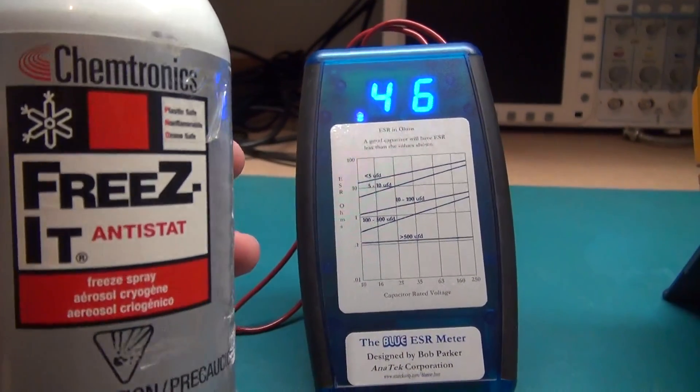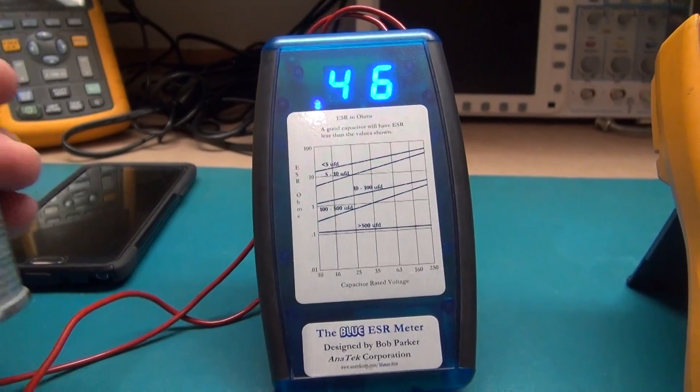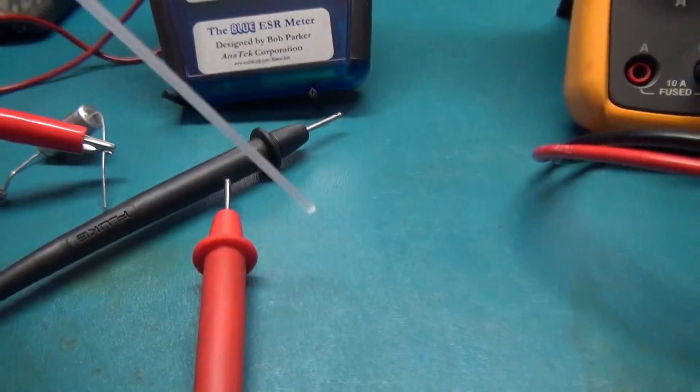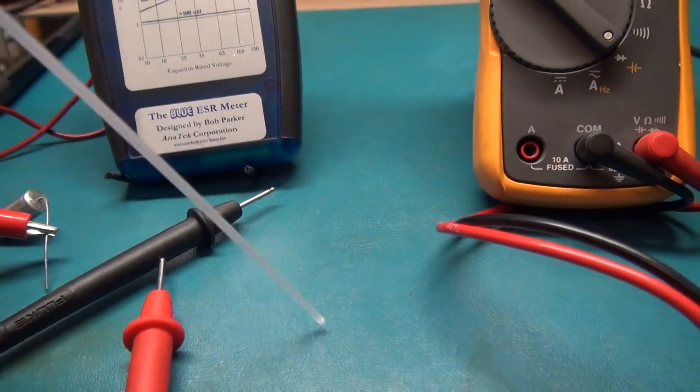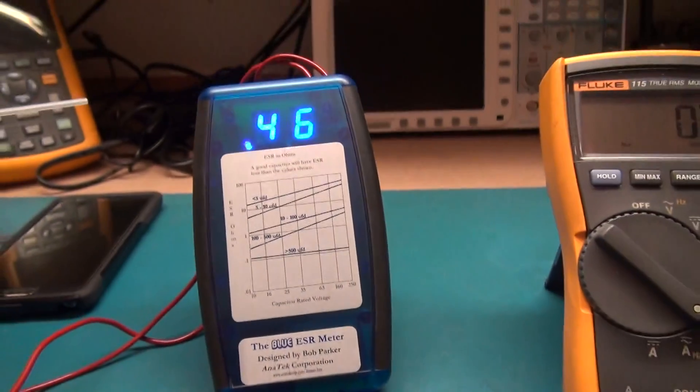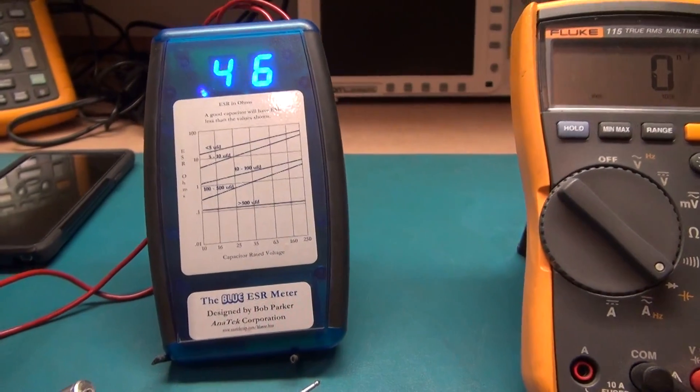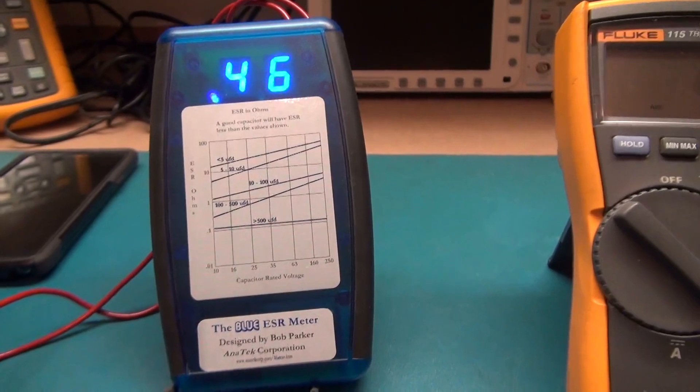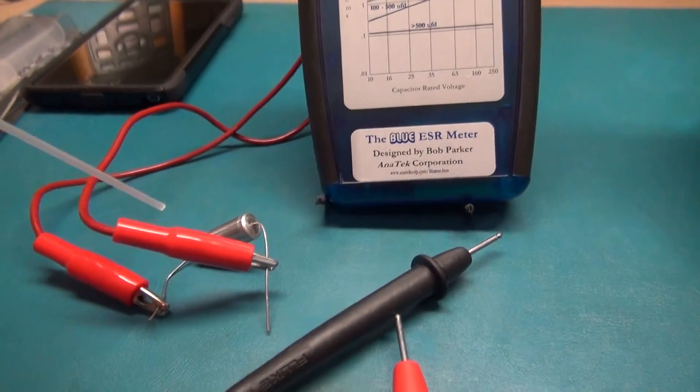Typically you can temporarily get the capacitor to work again while you froze it. You would go around your circuit and spray each capacitor and find where the fault is. Now I want to show you here what happens when you freeze this capacitor that's probably 20 years old.